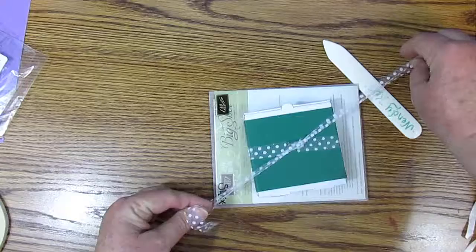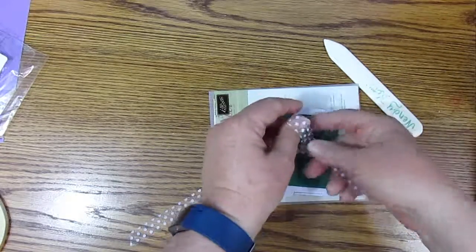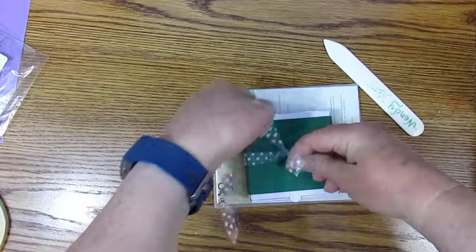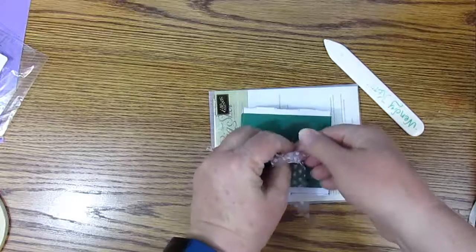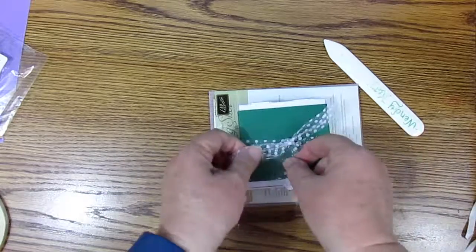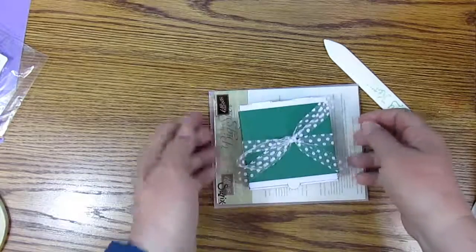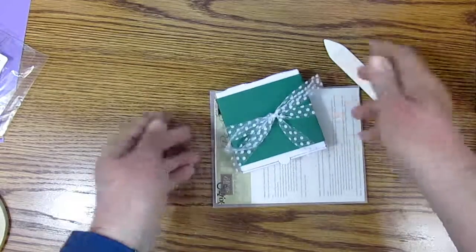And we will tie. Tie your bow either direction you want. Mine usually ends up not exactly straight. Try to even out these pieces. Okay. There we go.